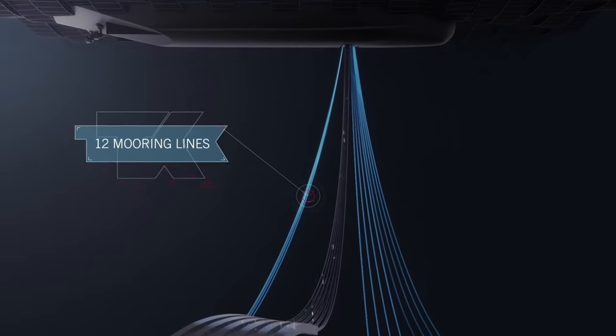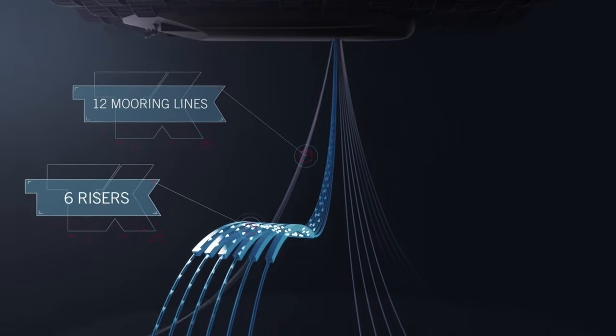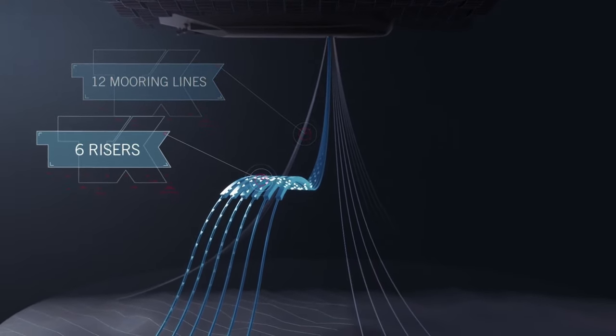Twelve mooring lines keep Petriyal Kanaar geostationary and a total of six risers are installed for stable and efficient production.